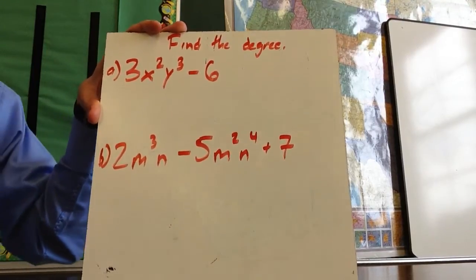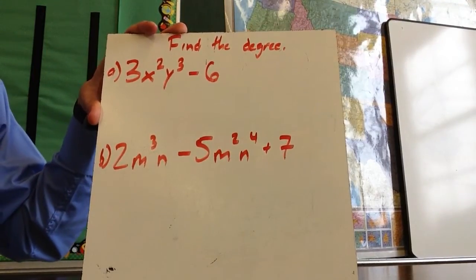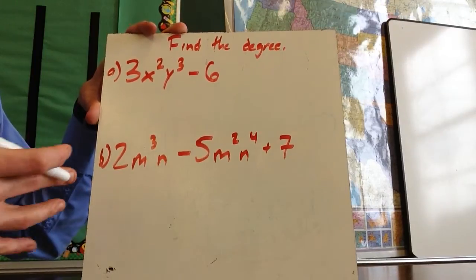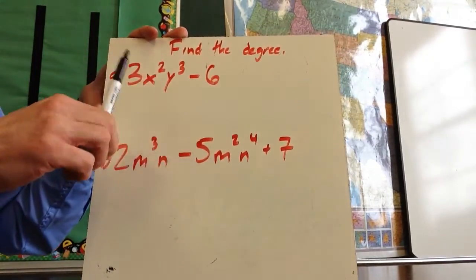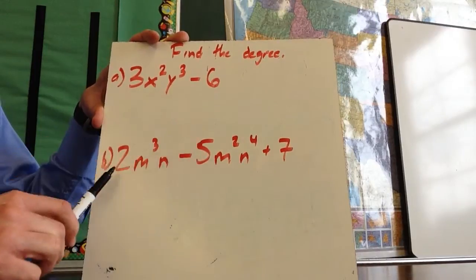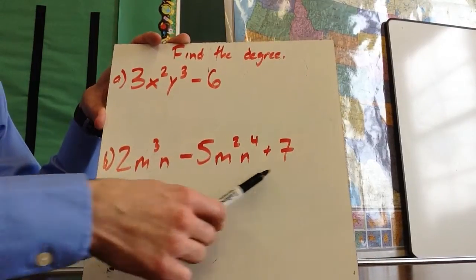Keep in mind that polynomial, meaning poly meaning many, means each of these is going to have multiple terms. So this one, for example, has one term, two terms. This has one, two, three terms.